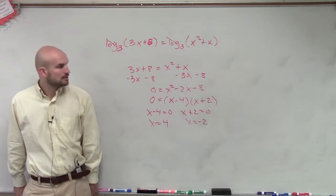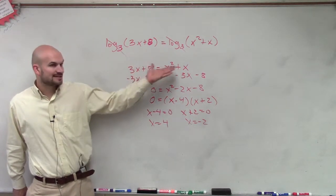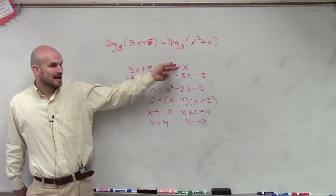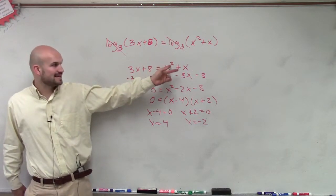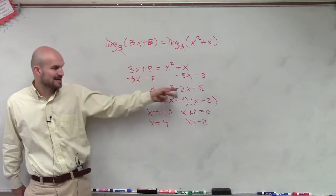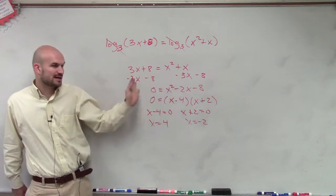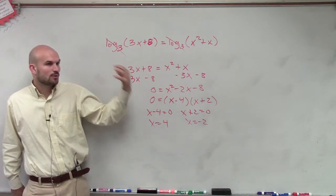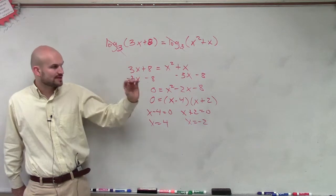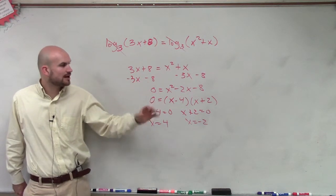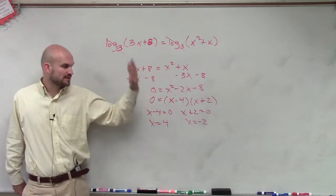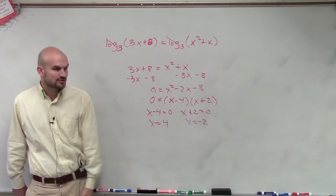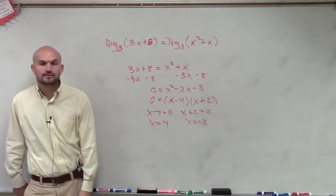Is that equal to zero? Once I have this equation, it's a quadratic. I can't combine the x squared with the x, so it's a quadratic equation — I get them all on the same side and set them equal to zero. For a quadratic, there are three solving processes: quadratic formula, completing the square, and factoring. In this example, I showed you how to do it by factoring.